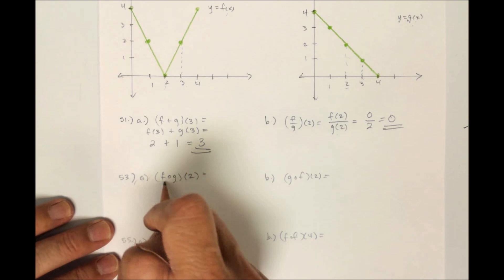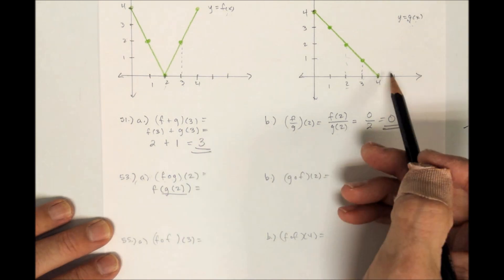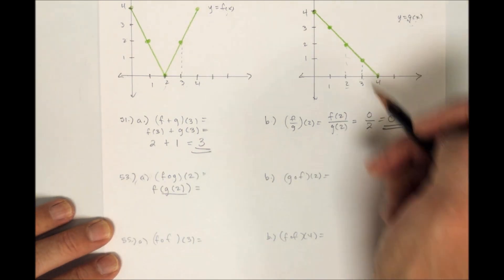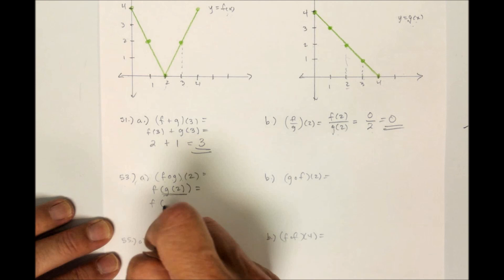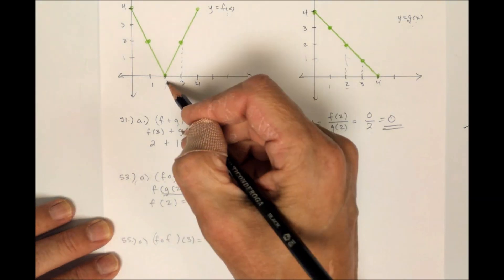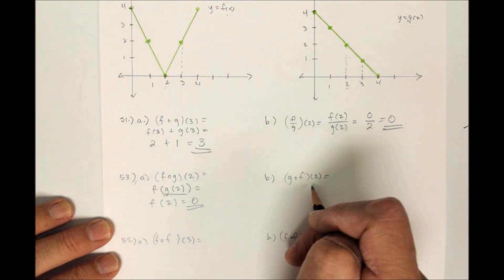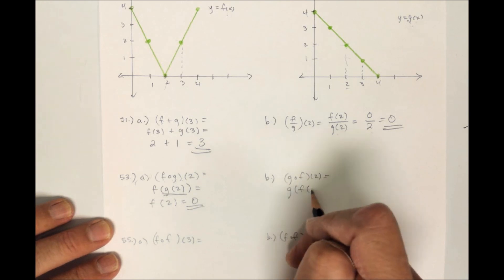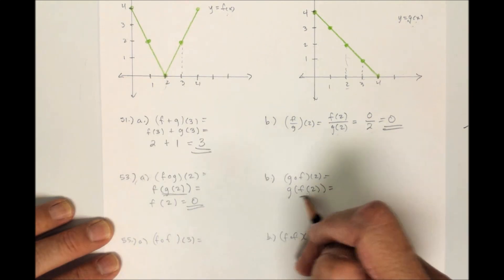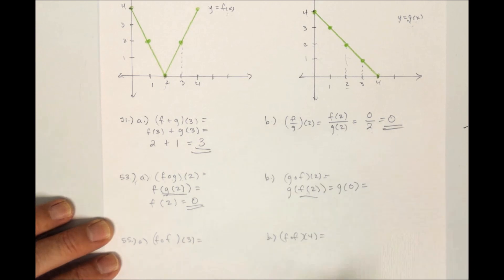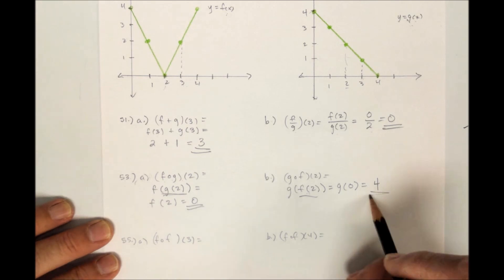For f circle g of 2, this is f of g of 2. G of 2 from the graph is 2, so that underlined part is 2, meaning this is f of 2. F of 2 from the graph is 0. Now let's see if we get the same thing the other way: g of f of 2. F of 2 is 0, so this is g of 0. G of 0 from the graph is up at 4. So two different answers — definitely not commutative.